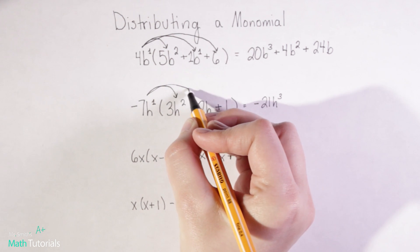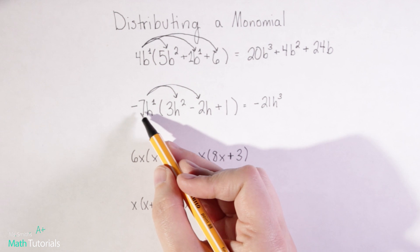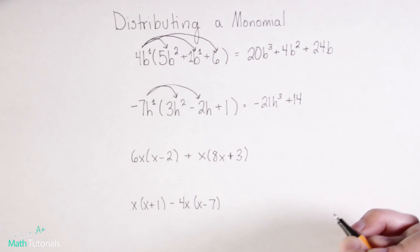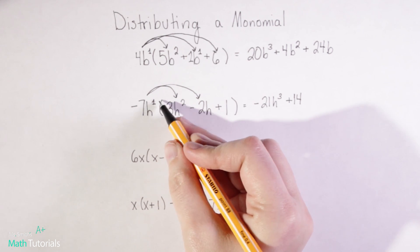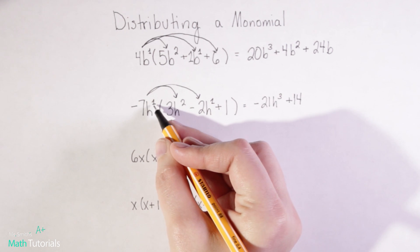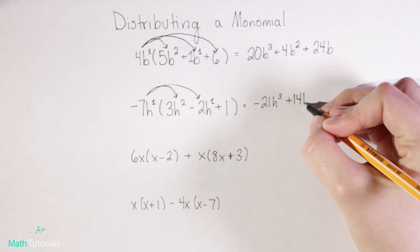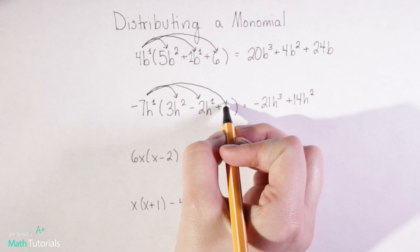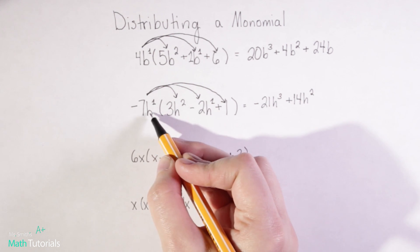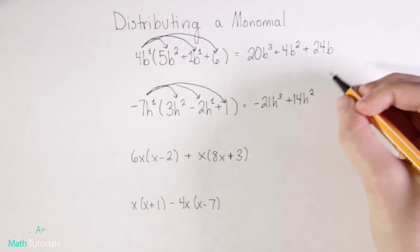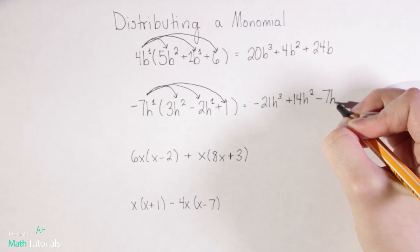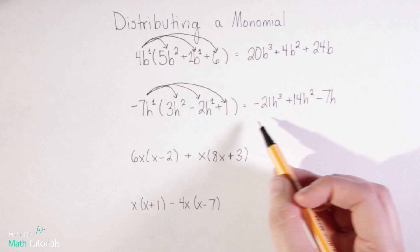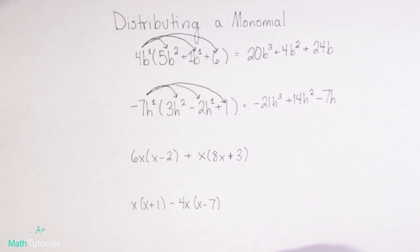We'll keep distributing to the next term. Negative 7 times negative 2 is going to be positive 14. H to the first times h to the first, we add our exponents here so we'd end up with h to the second. Let's keep distributing. So negative 7h to the first times positive 1, that's just going to be negative 7h. So again making sure I've got it in standard form and I do. So we're going to keep moving.